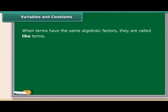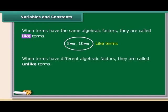When terms have the same algebraic factors, they are called like terms. And when terms have different algebraic factors, they are called unlike terms.